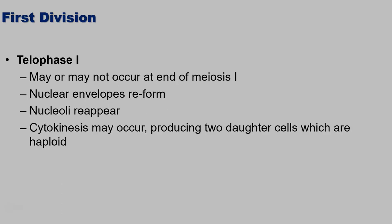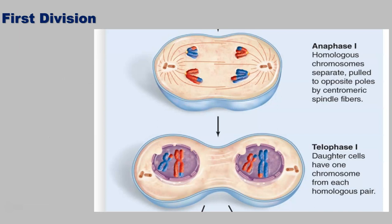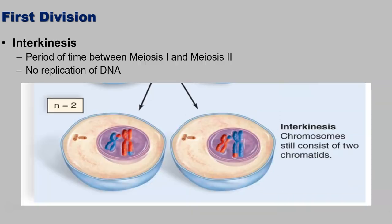Telophase I may or may not occur at the end of meiosis I, but the nuclear envelopes reform, the nucleoli reappear, and cytokinesis may occur, which produces two daughter cells that are haploid but still have duplicated chromosomes. Interkinesis is just the period of time between meiosis I and meiosis II — there is no more replication of DNA. Notice that the cells are haploid but they still have duplicated chromosomes.